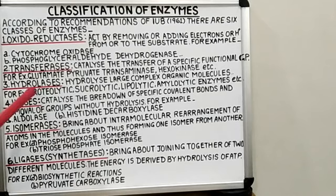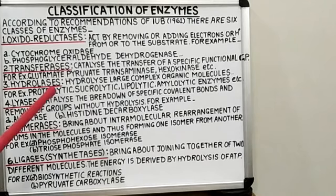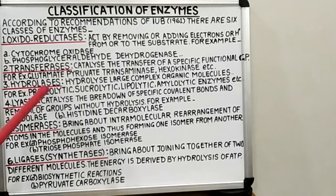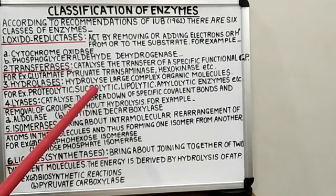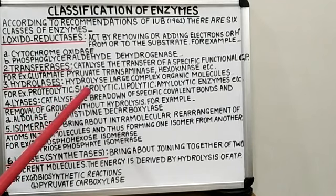The next class is hydrolases. These enzymes bring about the breakdown of large complex organic molecules into smaller ones by adding water, or causing hydrolysis, and breaking the specific covalent bonds. For example, proteolytic enzymes like pepsin, trypsin, rennin, etc.